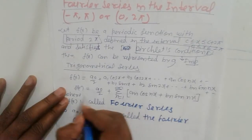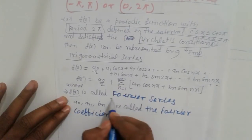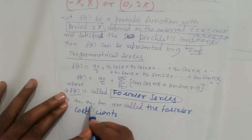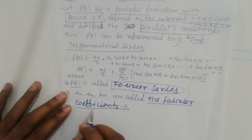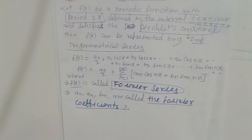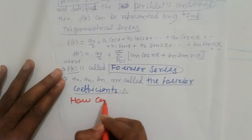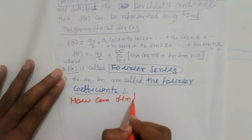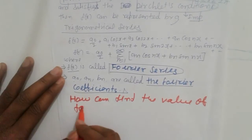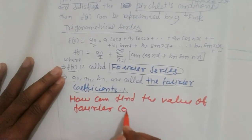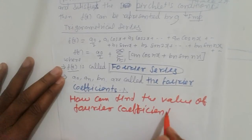That is the trigonometric Fourier series, where f(x) is called a Fourier series and a0, an, bn are called the Fourier coefficients. Now, how can we find the Fourier coefficients? How can we find the value of the Fourier coefficients?